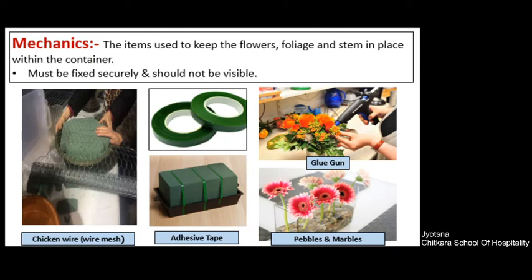Mechanics — any item or tool that is used to keep all your plant material, all your flowers, foliage and stems in place properly within the container will be called as mechanics. Most of the time these mechanics are fixed securely and they should not be visible in the final product of your flower arrangement.